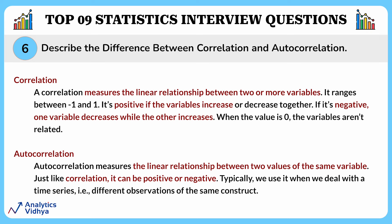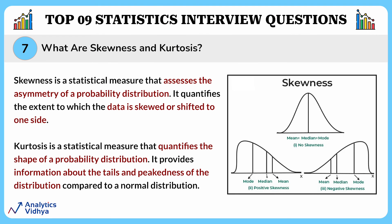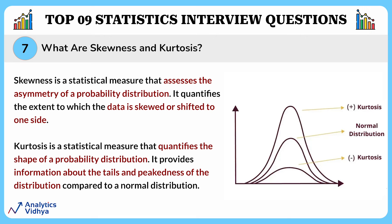The next question asks about skewness and kurtosis. Skewness is a statistical measure that assesses the asymmetry of a probability distribution — it quantifies the extent to which data is skewed or shifted to one side. A distribution is left skewed if it has a tail on the left side, and right skewed if it has a tail on the right side. Kurtosis, on the other hand, is a statistical measure that quantifies the shape of a probability distribution. High kurtosis means heavy tails and more extreme values, while low kurtosis indicates lighter tails and fewer extreme values. It helps understand how much data is concentrated in the tails.